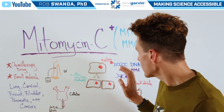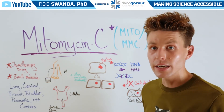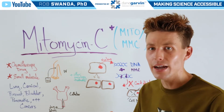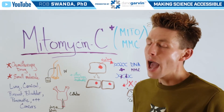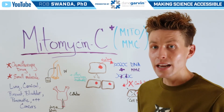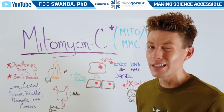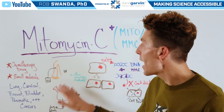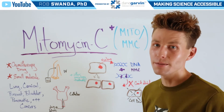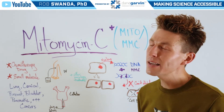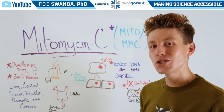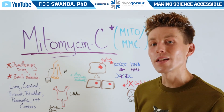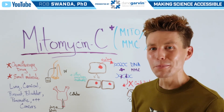Mitomycin C does have a higher affinity for cancer cells because they are faster replicating. However, it can affect healthy cells as well. In the laboratory, at high doses of mitomycin C, it's also been shown to interfere with RNA production as well as protein production.